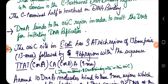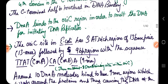The 9 base pair regions have the sequence 5'-TT(A/T)T(C/A)C(A/C)A-3'. This sequence is found within the E. coli origin of replication.